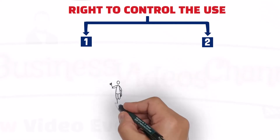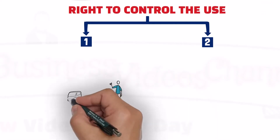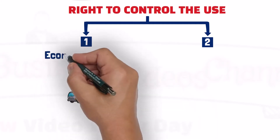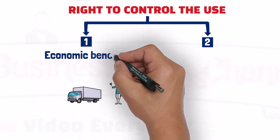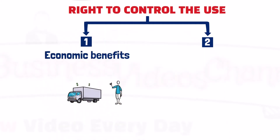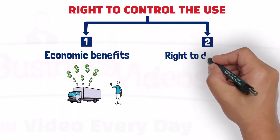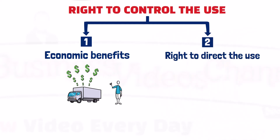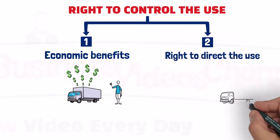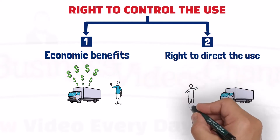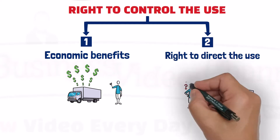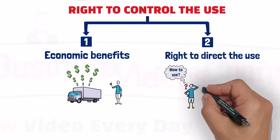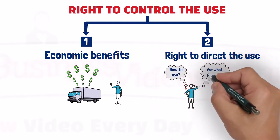First, the customer should have the right to obtain substantially all the economic benefits from the asset. And second, the customer should have the right to direct the use of that asset — that is to say, how the asset is used and for what purpose it is used.